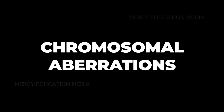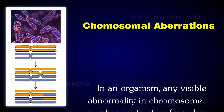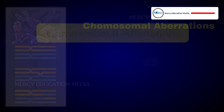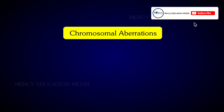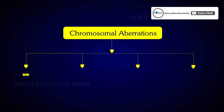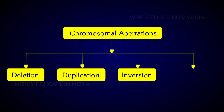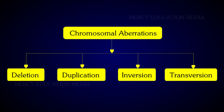What are chromosomal aberrations? In an organism, any visible abnormality in chromosome number or structure from the diploid set is known as chromosomal aberration. The chromosomal aberration is divided into deletion, duplication, inversion, and transversion.